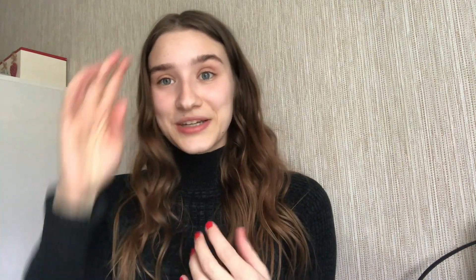There should be a picture on the screen showing the opposite ends of the scale and the personality traits someone may show. We have introvert and extrovert, and unstable and stable. You can also see that there are four types of personality as well — which is a different theory — but you can see the types of behaviours people might show with these personality types.